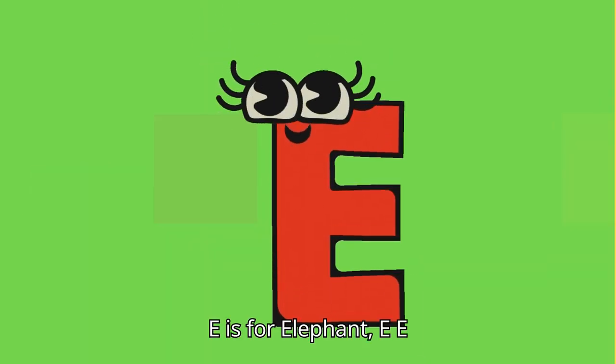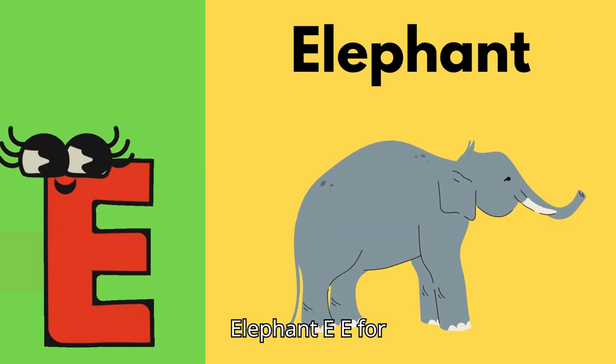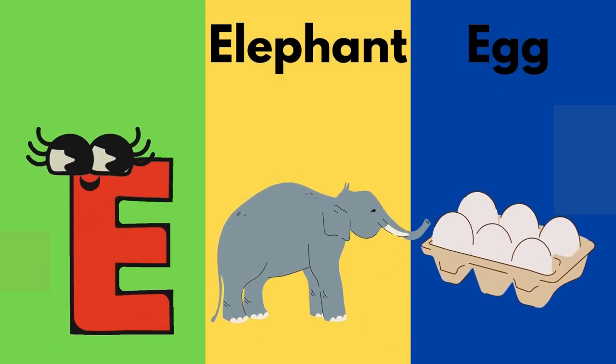E is for elephant. E. Elephant. E for egg. Egg!